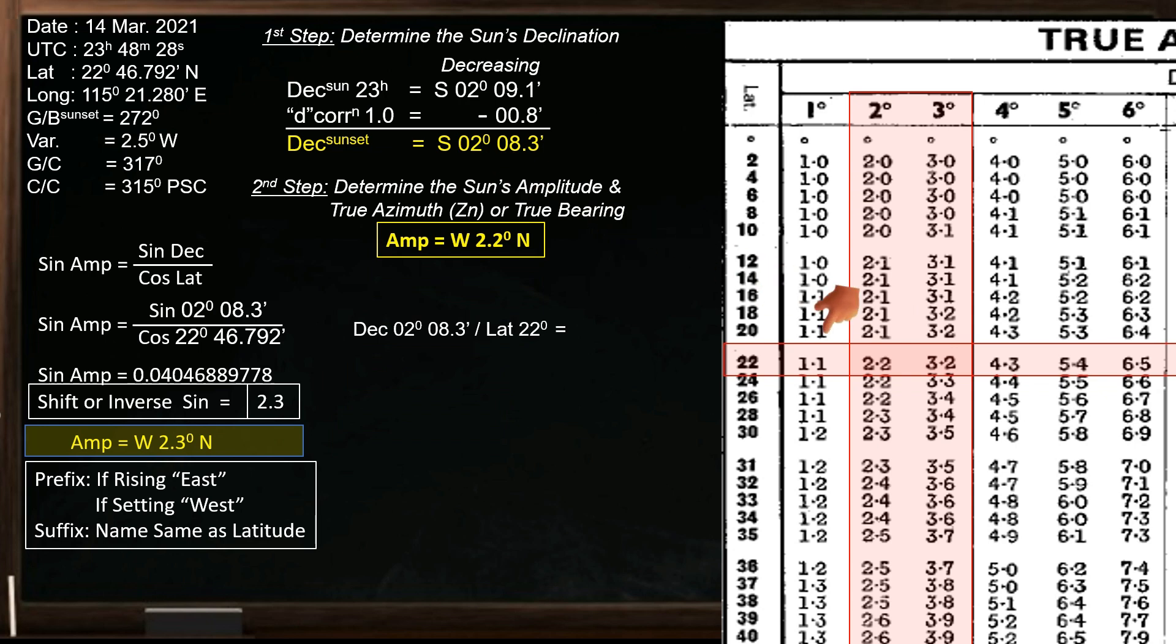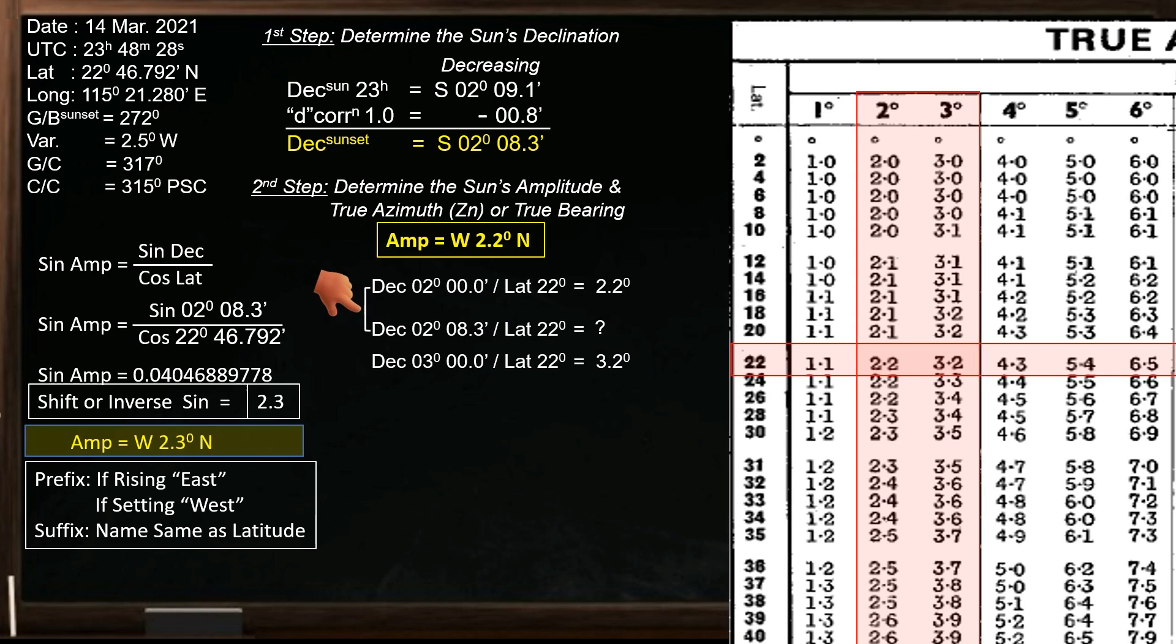At declination 2 degrees, latitude 22 degrees, the amplitude is 2.3 degrees. At declination 3 degrees, latitude 22 degrees, the amplitude is 3.2 degrees. We are looking for the amplitude of this declination and latitude. The difference between these two declination is 8.3 minutes, which is equal to 0.14 degree. To convert 8.3 minutes into a unit of degree, divide it by 60.